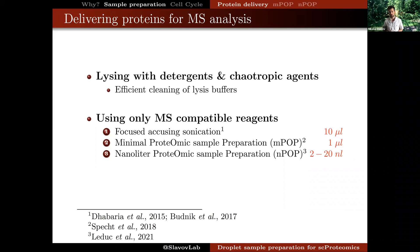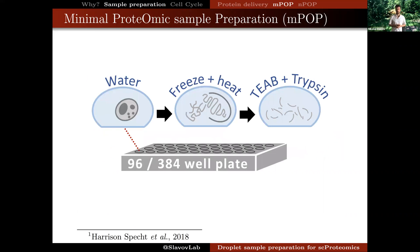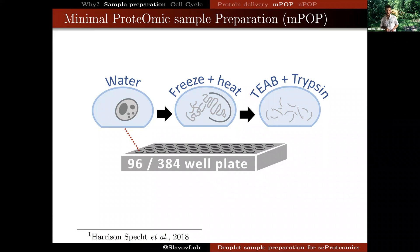In this process, as you can see with our second and third generation methods, we have been able to reduce the volumes of sample preparation by orders of magnitude. Harrison Specht, a PhD student in my group, led the first effort in developing an automated relatively high-throughput method. Harrison tried a lot of different methods, some of which worked beautifully in lysing single cells such as a freeze-thaw cycle, but they weren't efficient in extracting the proteins for mass spec analysis. He then found that the freeze-heat cycle, which we call MPOP, performed in a multi-well plate works quite well.